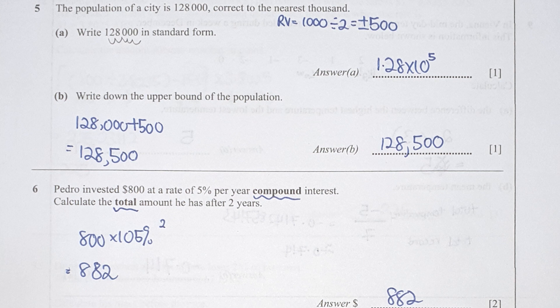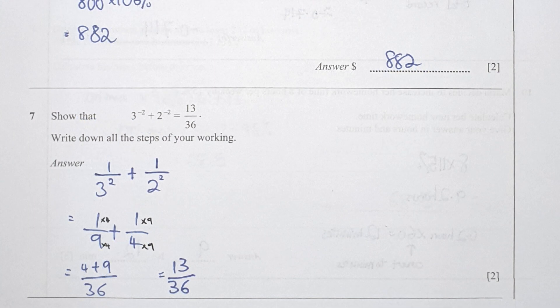Question 7: I get rid of the negative in the power section by shifting it down into the denominator, giving 1 over 9 plus 1 over 4. Making the denominator 36, you get the result as 13 over 36, as requested by the question.